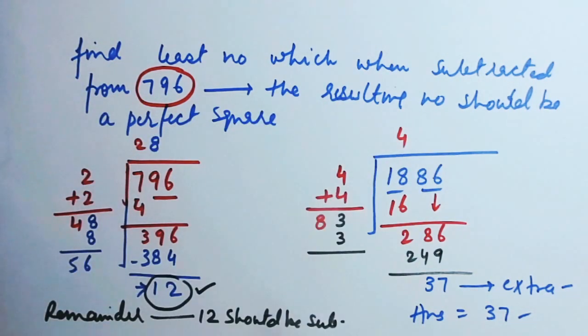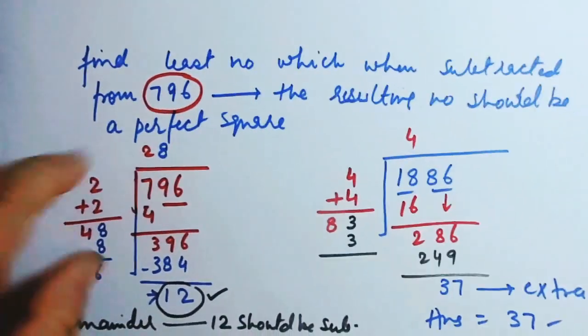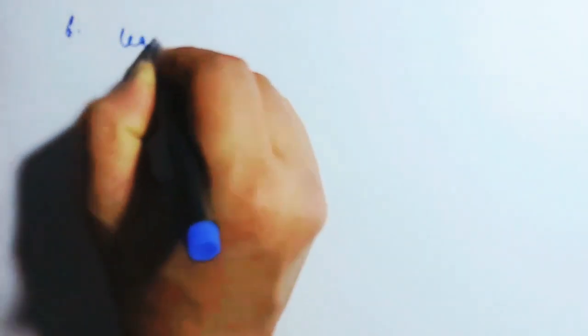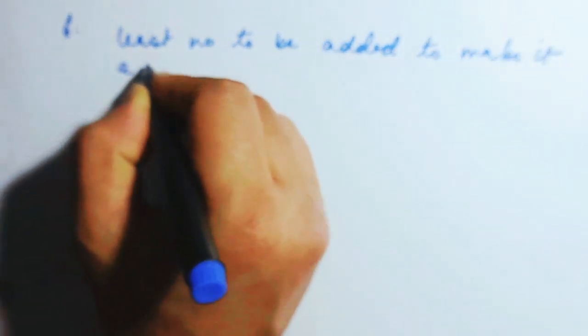Now find the least number which when subtracted — in the next problem, we have: find the least number which when added to 796. Actually, not the greatest number — least number which when added to 511 to make it a perfect square. So least number to be added. The previous was least number to be subtracted; here we have least number to be added, to make it a perfect square.